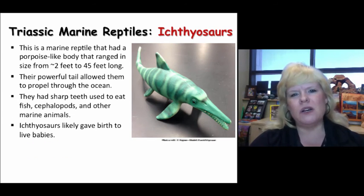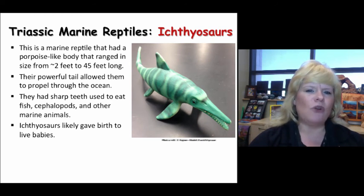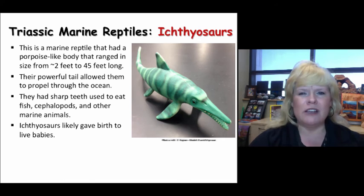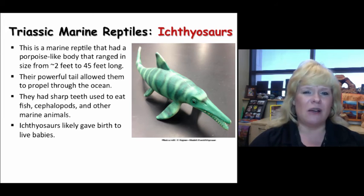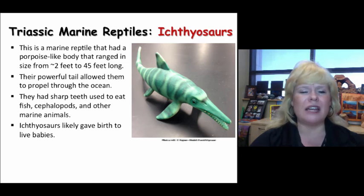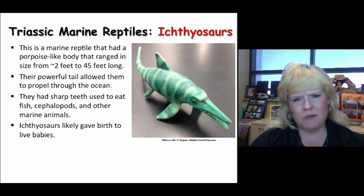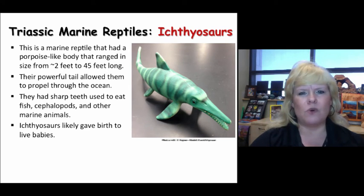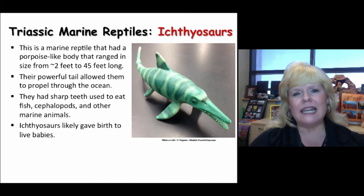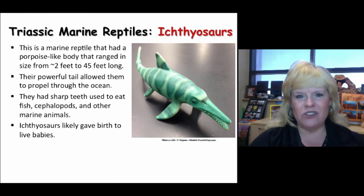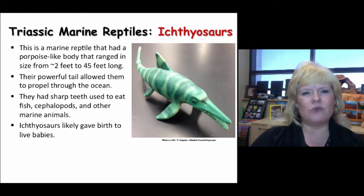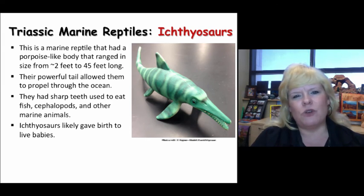That brings us to one of the big predators of the Triassic. There are three major groups of marine reptiles throughout the Mesozoic, and ichthyosaurs are the ones that were very common during the Triassic — not that we didn't have the other two types. They look like a porpoise or even a dolphin, but don't be deceived: they're reptilian, not mammals. They were air-breathing reptiles, so ichthyosaurs actually came up to the surface of the water to gain oxygen and then would go back down.